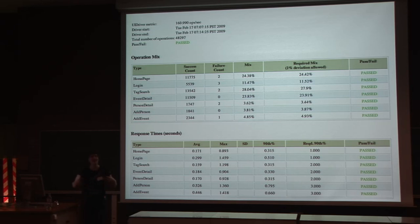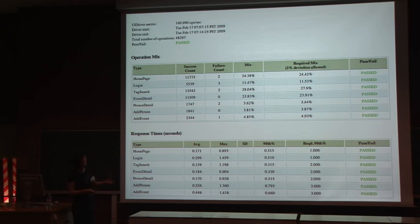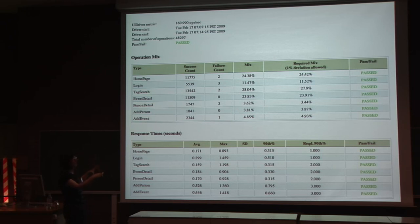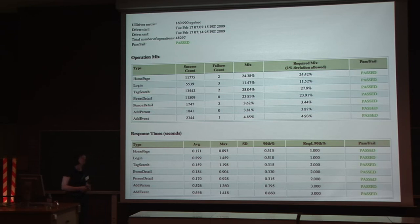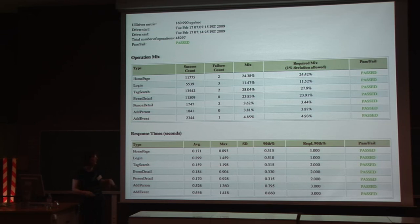An operation is basically a specific use case, an actor's interaction with a system — for example, a user accessing a web page. The two tables displayed here are the operation mix, which shows you the number of operations performed successfully, the number that failed, and the actual mix of that particular type of operation. This particular benchmark run was for a social networking application, so we have operations such as homepage, login, add event, or event detail. Down here we have response times for all of the operations: average, maximum, 90th percentile response time, and standard deviation.